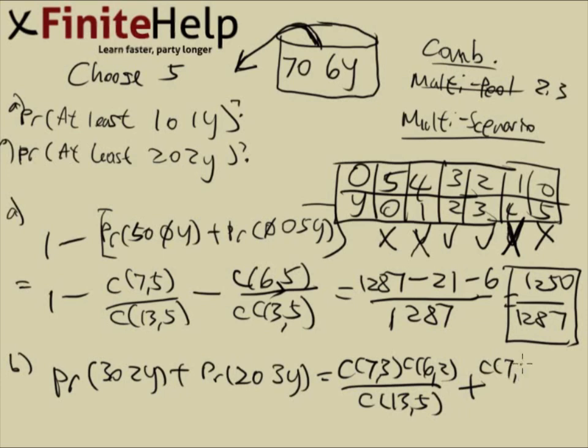Plus seven choose two. Six choose three. Again, over sample space, 13 choose five. That's going to come out to bottom again of 1287. Seven choose three is 35. Six choose two is 15. Seven choose two is going to be 21. Six choose three is going to be 20.